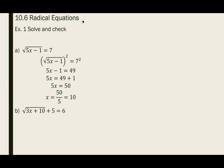Now if you look at this next item, what do I mean by the radical being by itself? As long as it does not have any addition or subtraction attached to it, it's by itself. In this case, there is an addition lingering with this radical. So the first thing, before you raise it to the square or to the third or fourth power, you need to make sure that the radical is by itself.